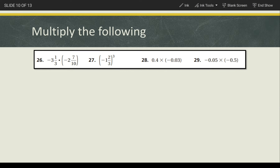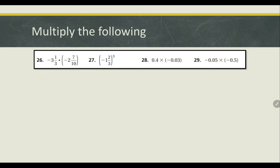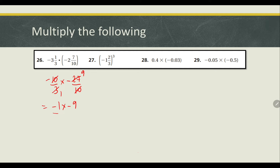Whenever we see questions like this, we are going to convert into improper fractions first. So we get negative 10 over 3 multiplied with negative 27 over 10. Now 3 will change to 1, 27 will change to 9, and 10 and 10 will simplify themselves. So we get negative 1 times negative 9 over 1 times 1, which is equal to 9.